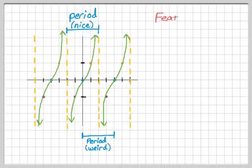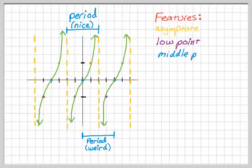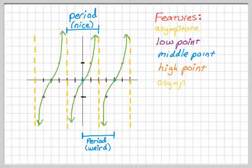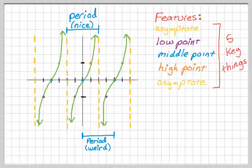So there are a couple key features. You've got an asymptote, and then following the asymptote you're going to have a low point that you'll plot, then a middle point that you'll plot, a high point, and then you'll close off one period with another asymptote. The low point, middle point, and high point are analogous to the minimum, sinusoidal axis, and maximum of a sine or cosine graph. That's going to be important for us. There's five key things, and that should ring a bell, because when we were graphing sine and cosine, we had five key things.